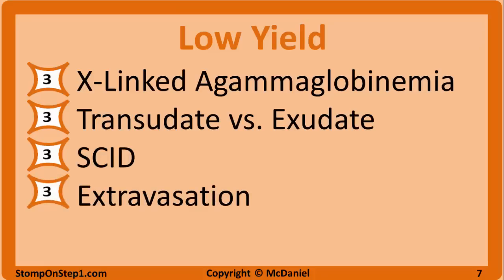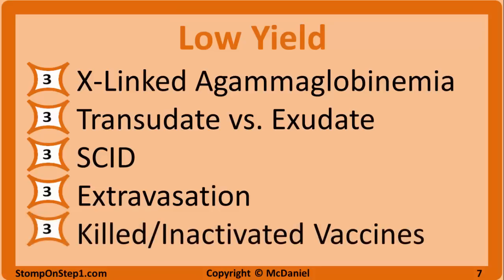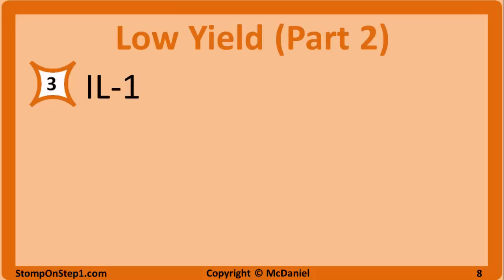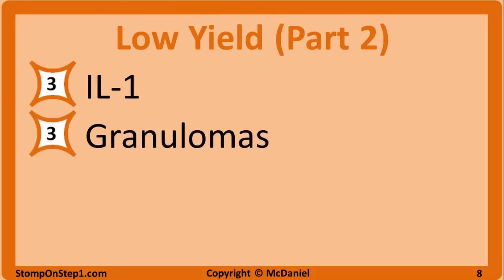High yield rating of 3 — neutrophil extravasation: a basic understanding of the different stages to get neutrophils from the bloodstream into inflamed tissue, and the key surface molecules, without memorizing every single step in detail. Killed or inactivated vaccines — know the basic definition, types of immunity elicited, and diseases commonly prevented. IL-1 — know its role in acute inflammation and fever. Granulomas — know the types of cells involved, their relationship to interferon gamma, how to identify a granuloma in a picture, and diseases that often present with granulomas.